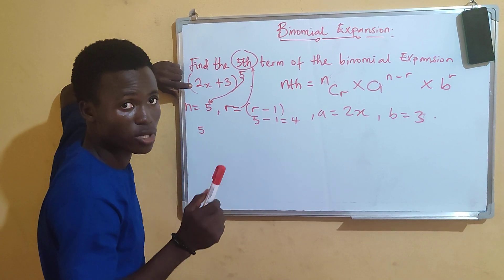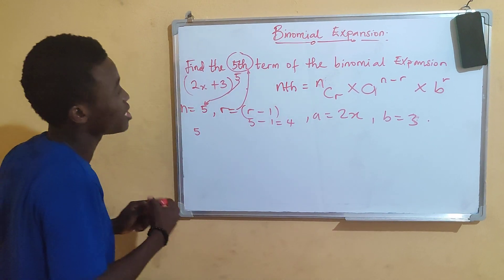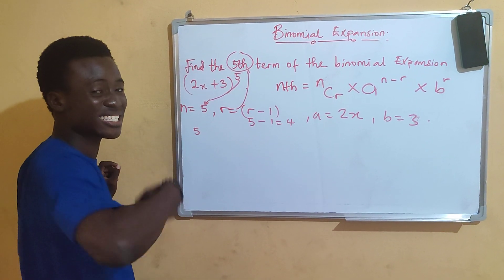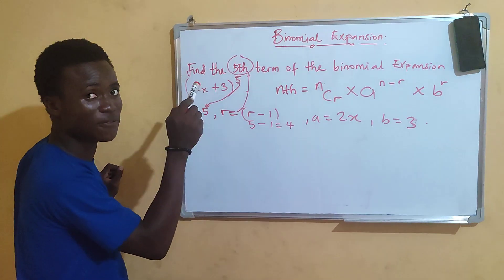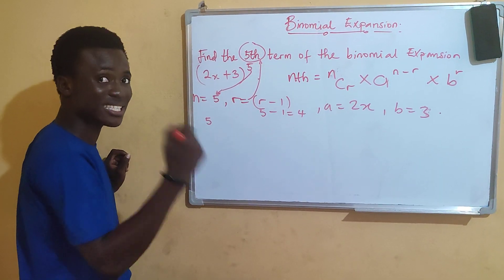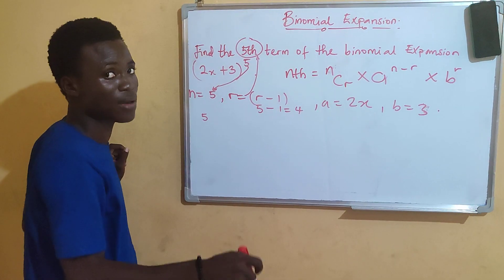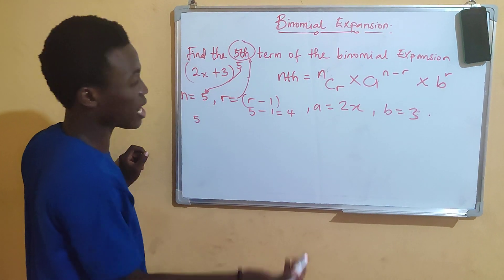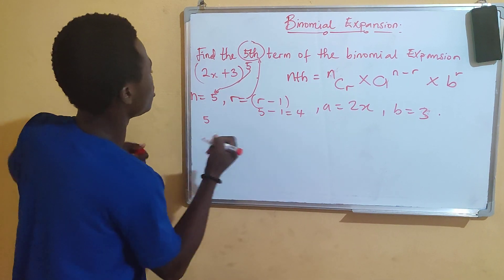You always remove 1 from it to get the right term you are asked to find. If you use it directly, the results you get will be the sixth term. So, you are asked to find the fifth term, you remove 1 to get the fifth term. If you are asked to find the sixth term, you remove 1 to get the sixth term. If you use it directly, you get a term ahead. So, you have to remove 1 from it.